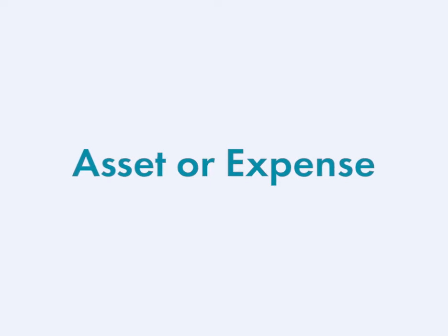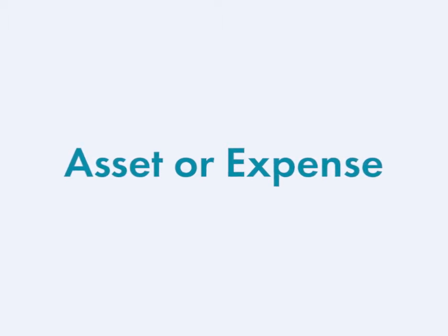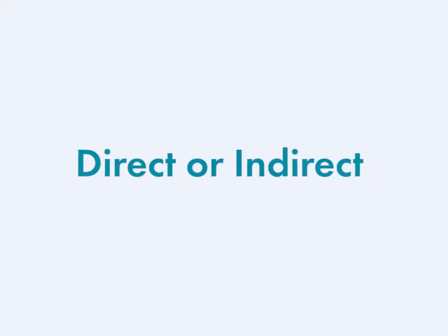Firstly, is the item you've bought an asset in the business or an expense item? Assets can be sold later and do not affect your profit figure or the value of your business. Expenses reduce the figure shown as your profit and are split into direct and indirect expenses. Essentially, direct expenses record the direct costs of making a sale.